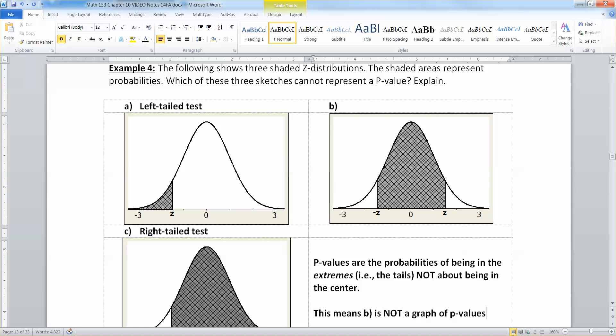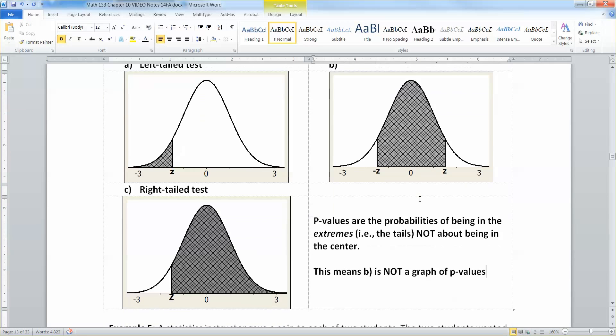It's almost actually the opposite of a two-tailed test. The two-tailed test would have the white parts shaded dark, and then that dark part in the middle left alone, left white.